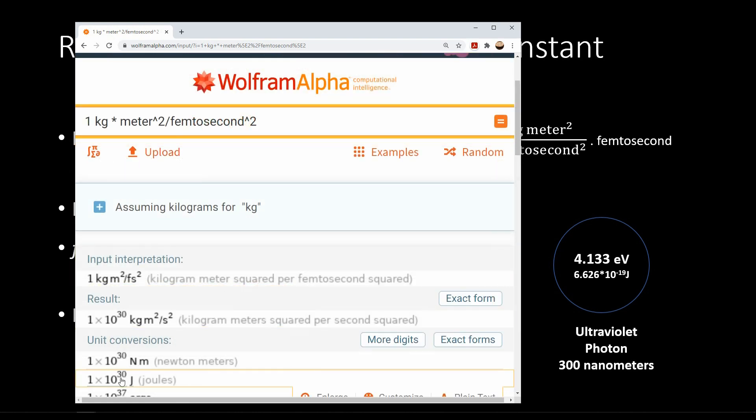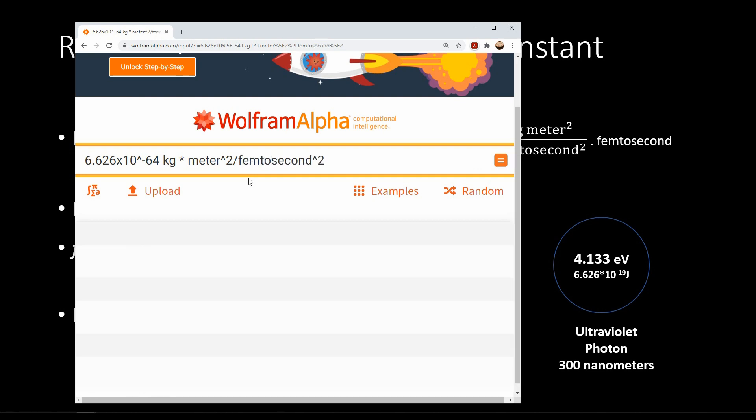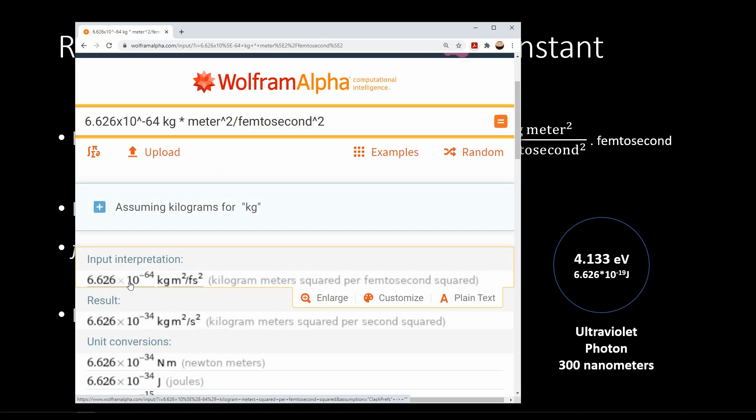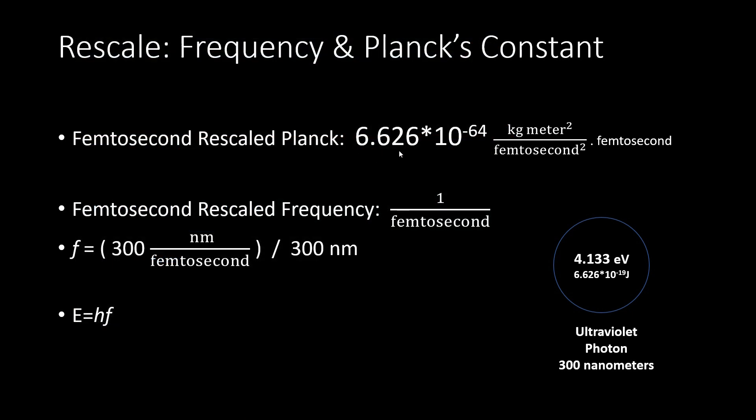So if you take the value of Planck's constant when it is in terms of seconds, we would make this negative 64 and change this to femtoseconds. So you can see that this value to the negative 64th in terms of femtoseconds is equivalent to the Planck's constant with negative 34 in terms of seconds. And that's how we get the rescaled Planck's constant when we use femtoseconds for the joule and the second.